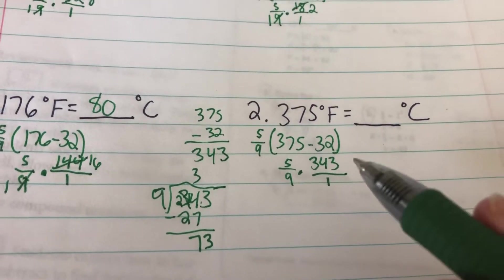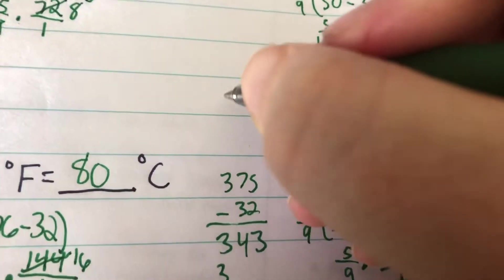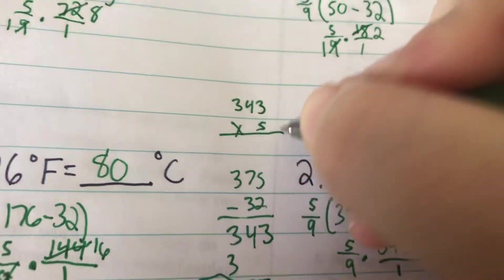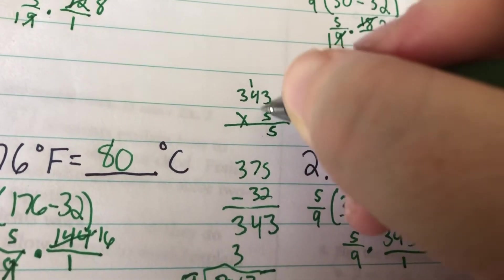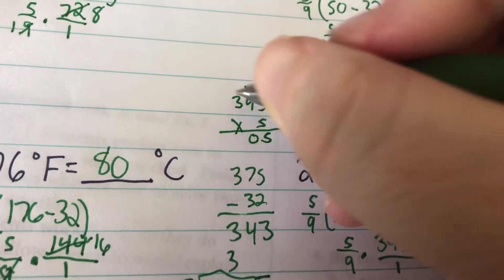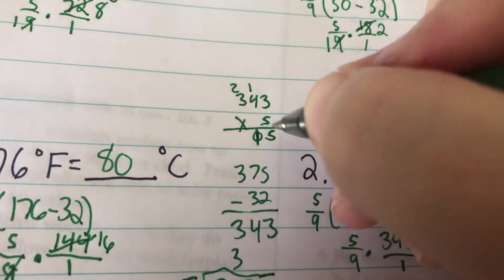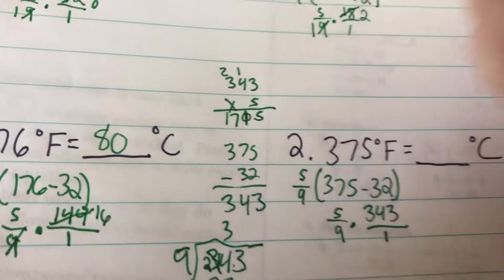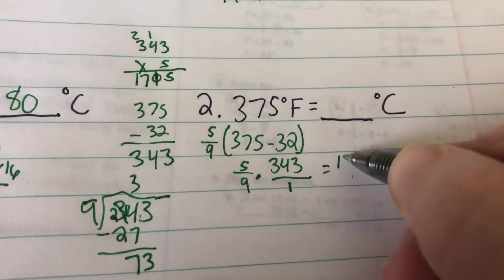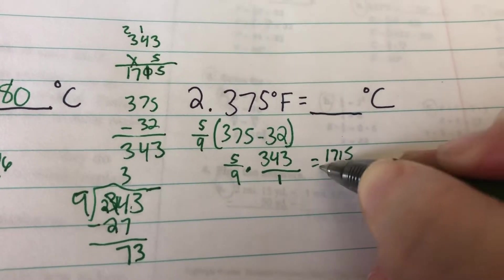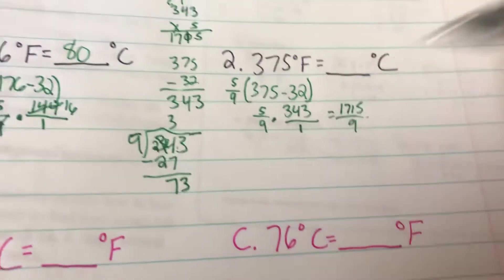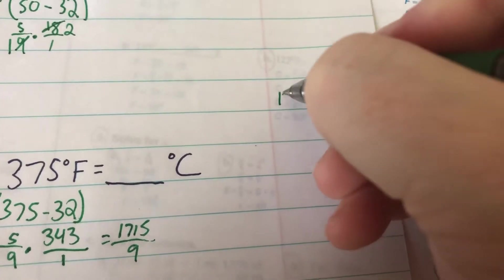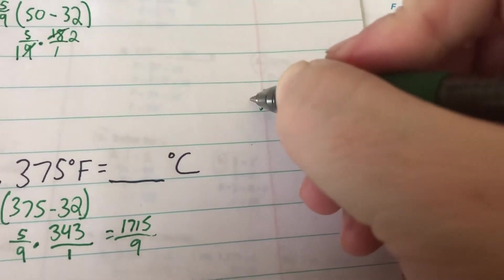So I'm going to do 343 times 5. 5 times 3 is 15. 5 times 4 is 20. Oh sorry, carry the 1, 21. 5 times 3 is 15, 16, 17. So it's going to be 1715 over 9. I'm going to come over to the side here so I've got plenty of room.